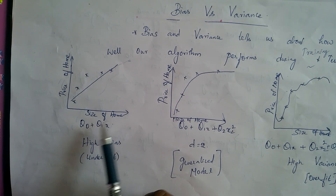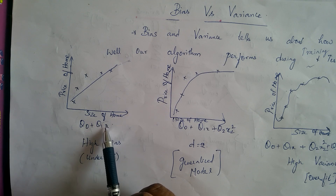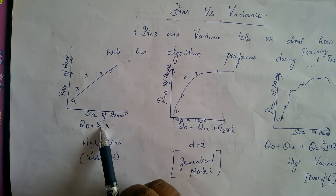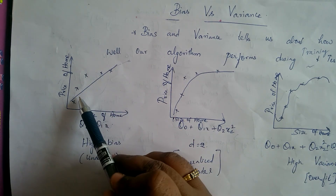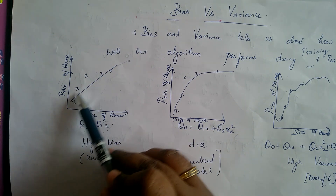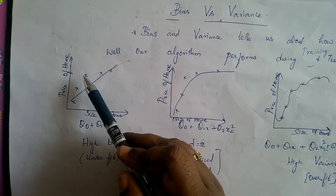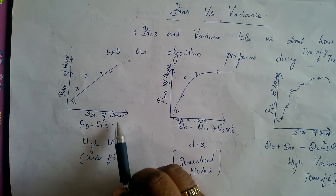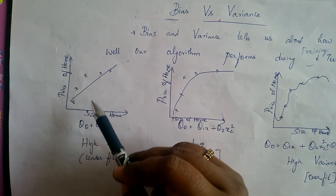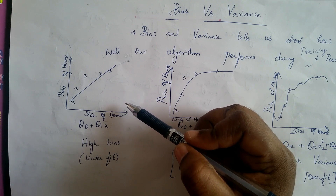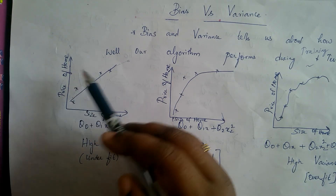Here x is the size of the home. We have the linear equation theta-naught plus theta-1 times x, where x is the input and these two are the model parameters — this is the predicted variable. We can see that we were not able to fit most of the training inputs because we have only a single attribute. If we increase one more dimension, such as the location of the home, we may be able to fit the remaining inputs as well.